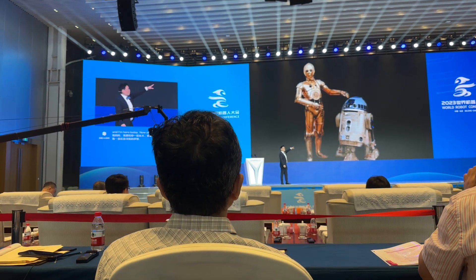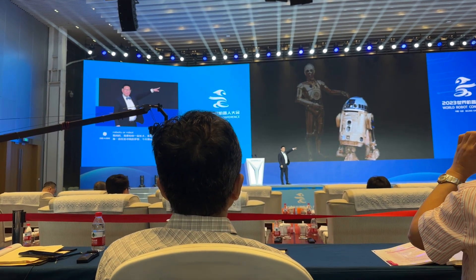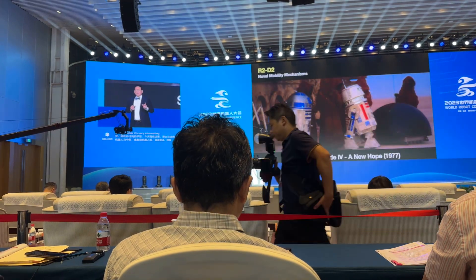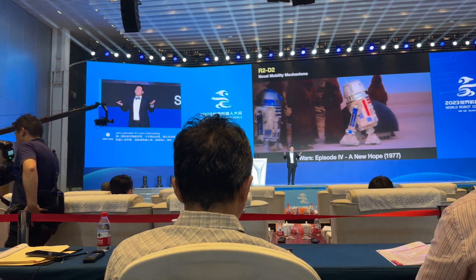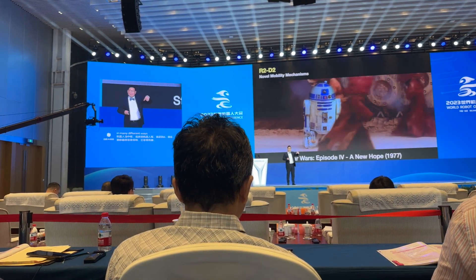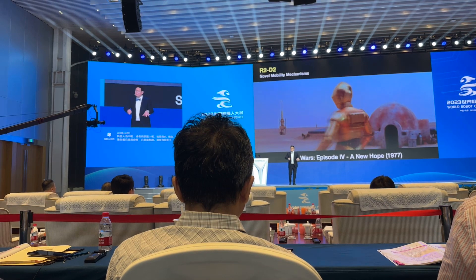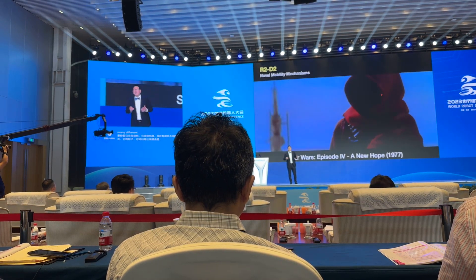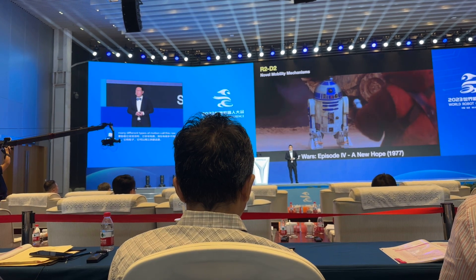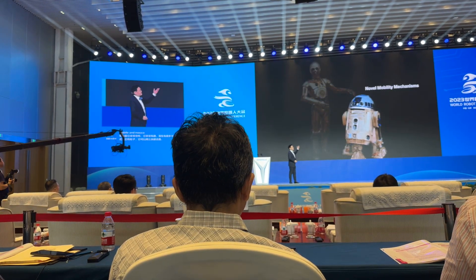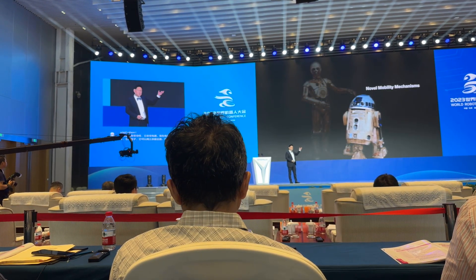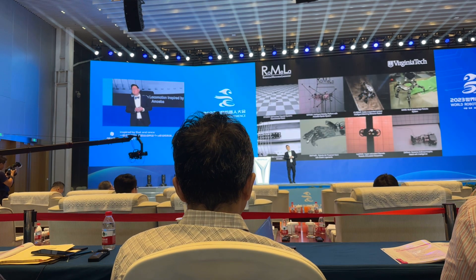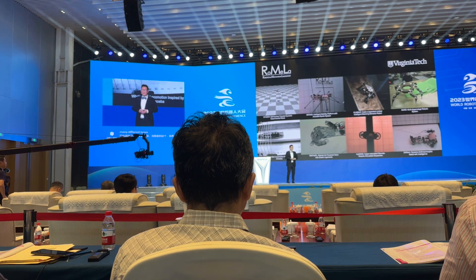Among these two robots, R2D2 is very peculiar and very interesting. It moves in many different ways — it has wheels, it can walk with three legs, some can walk with two legs; it has many different types of motion. I already called this a novel mobile mechanism. Since I was a kid, when I saw R2D2, I was inspired by that, and since then we've built many different types of novel mobile mechanisms.